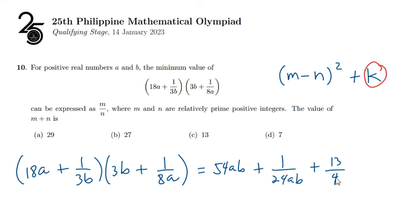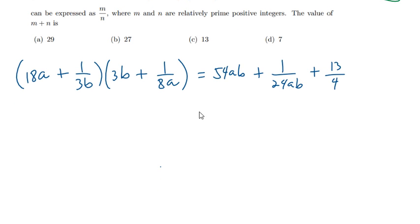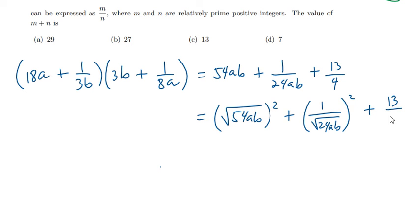So now, how do we transform this expression into this form? Notice that we can write this expression as the square of √(54ab) plus the square of 1/√(24ab) plus 13/4.